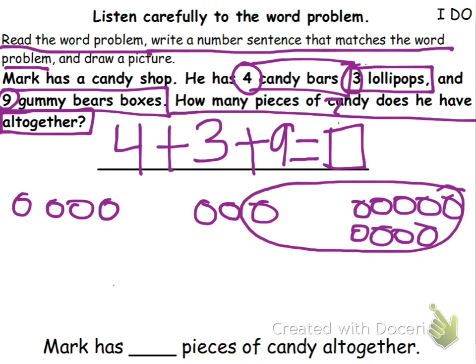Now I'm going to circle my ten just to make it easier. I know that this is ten, so it'd be easier just for me to count — ten, eleven, twelve, thirteen, fourteen, fifteen, sixteen. Of course, you can always just count them one by one: one, two, three, four, five, six, seven, eight, nine, ten, eleven, twelve, thirteen, fourteen, fifteen, sixteen. That would work too. So that means four plus three plus nine equals sixteen.